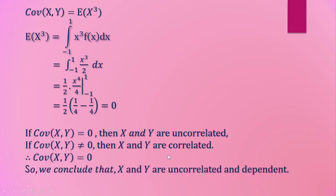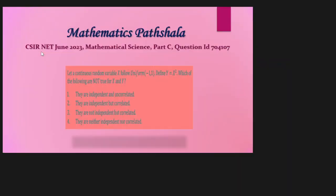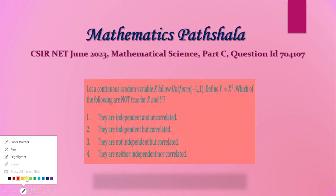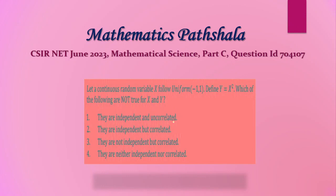So we conclude that X and Y are uncorrelated and dependent. Now checking the options: Option 1 states they are independent and uncorrelated — but we found they are dependent, so this is not true. Option 2 states they are independent but correlated — we found dependent and uncorrelated, so this is also not true. Option 3 states they are not independent but correlated — we found uncorrelated, so this is also not true. Option 4 states they are neither independent nor correlated — this matches our result, so it is true, not a false statement.